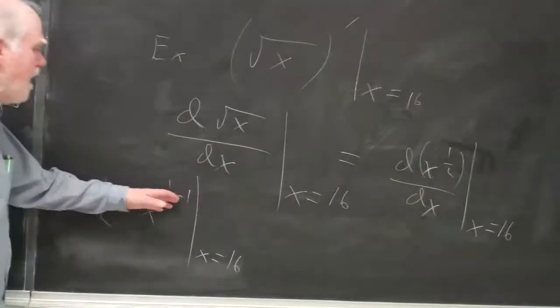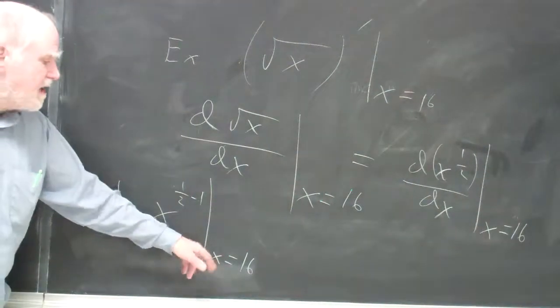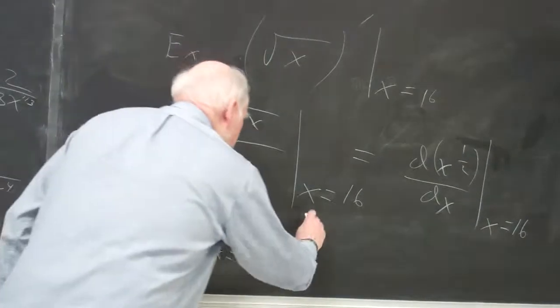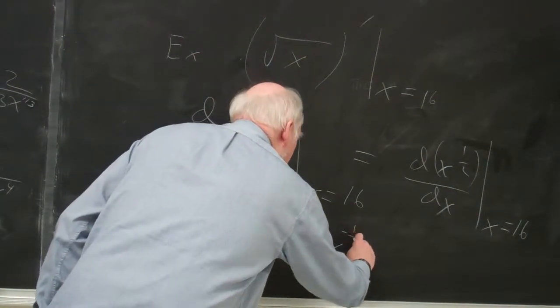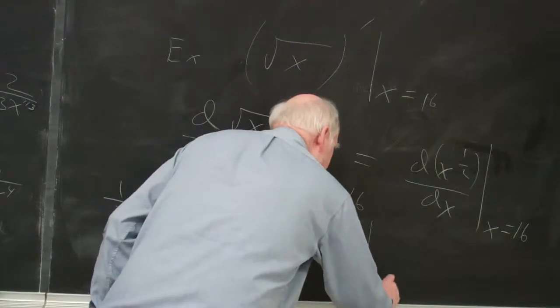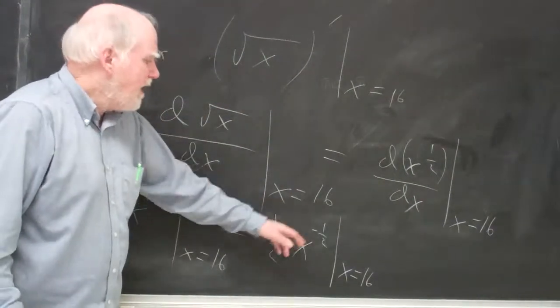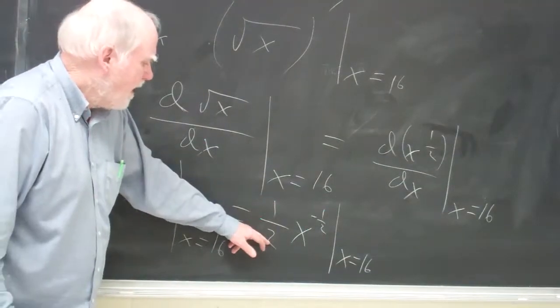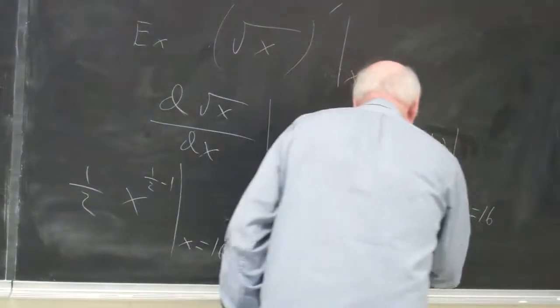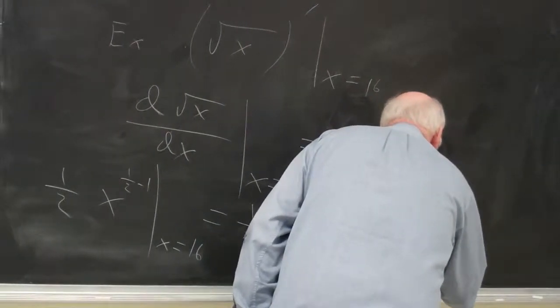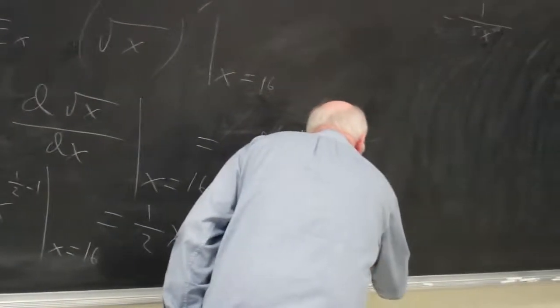Notice the derivative is gone because I've taken the derivative. But this stays because I haven't evaluated it yet. This equals 1/2 x to the negative 1/2, evaluated at x equals 16. I can't really evaluate it at a negative exponent. But if I bring the x down, I can say this is 1 over 2 times x to the 1/2 power evaluated at x equals 16.